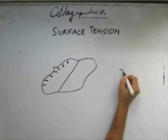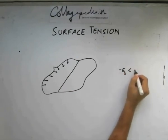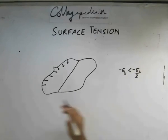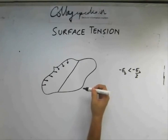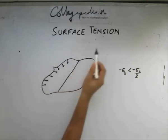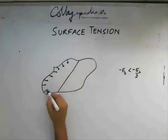Because what we found was minus Eb was less than minus Eb by 2. We have always seen situations where something at a higher energy level wants to go at a lower energy level. So all the molecules at the interface will try to reach the bulk.